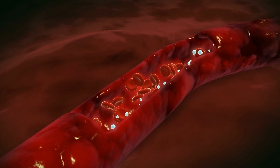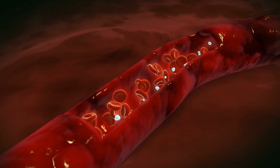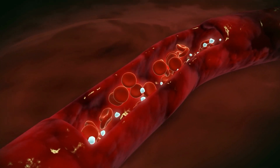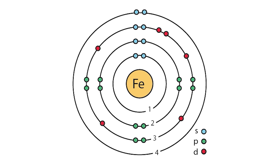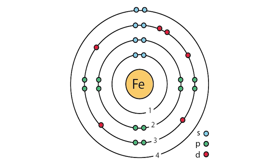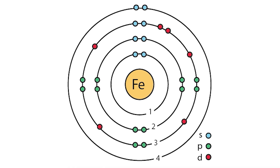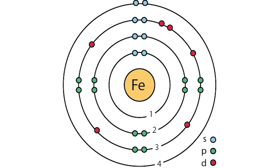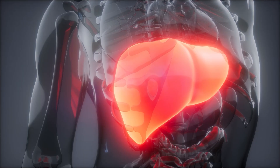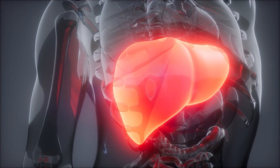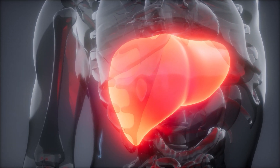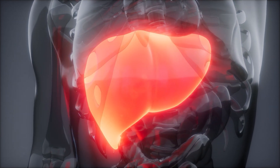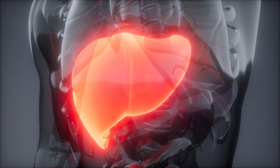Another problem solved — now we're controlling how many red cells are made. But then we run into another problem because hemoglobin won't work unless it has enough iron. And if iron is free in the body or in the cell, it's toxic. So you need to control the iron in the body and also its transport. The liver makes a hormone called hepcidin that tells the intestine how much iron to bring in, and it also makes a transport protein called transferrin which carries iron throughout the body.